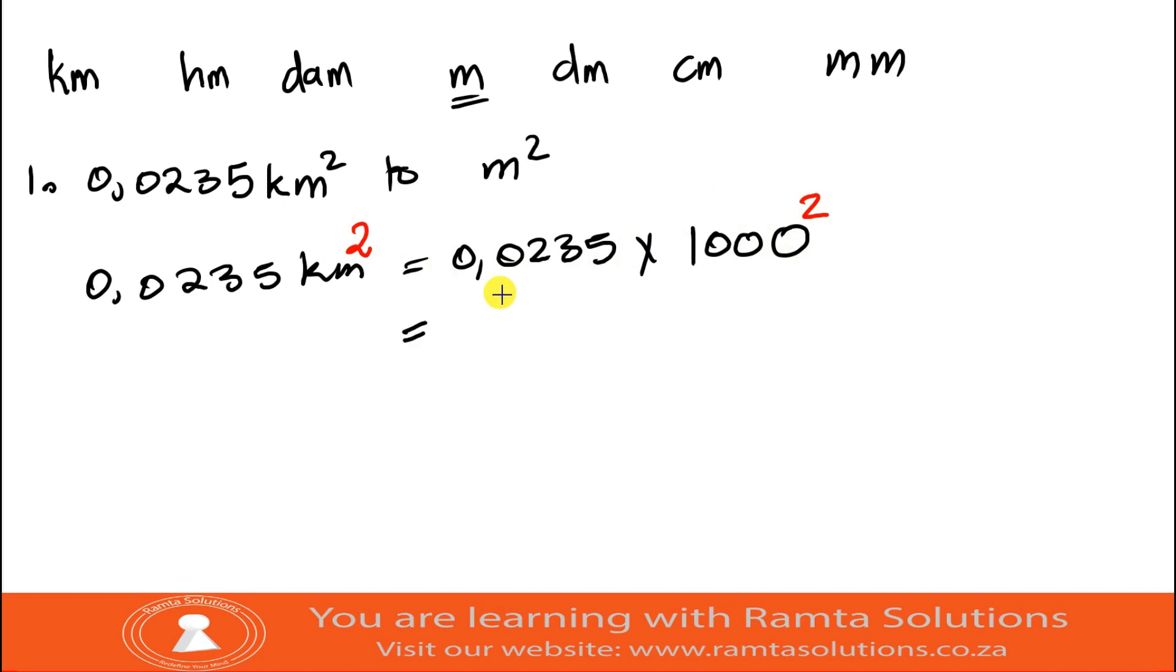Now what is our answer? Our answer will be 0.0235 multiplied by thousand squared. Now what is our answer? Our answer is 23,500 square meters. That is our answer. I hope you guys now understand it.